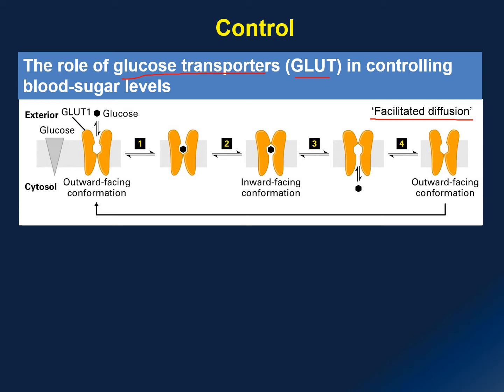The flow of glucose is in accordance with the concentration gradient of glucose. There is more glucose outside the cell than inside, and therefore glucose will flow in passively without any ATP or energy investment. With the binding of glucose to the GLUT1 transporter, for instance, it will change its conformation, and with that, glucose is carried inside the cell.